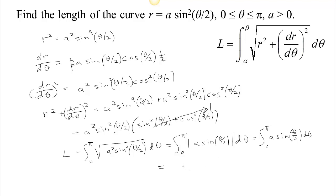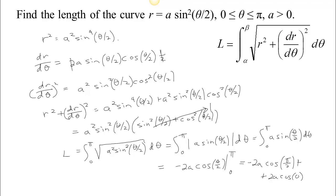So we can drop those absolute value bars and go ahead and do the integral. The antiderivative of sine is negative cosine, so we're going to have negative 2a cos(θ/2). The 2 is needed because taking the derivative of cosine gives negative sin(θ/2) times the derivative of what's inside, which is an extra one half — so this 2 anticipates that. Evaluating between 0 and π: when we plug in π we get negative 2a times cos(π/2), minus negative 2a times cos(0). Minus minus is plus. cos(π/2) = 0, so that term vanishes; cos(0) = 1. So the length is equal to 2a.